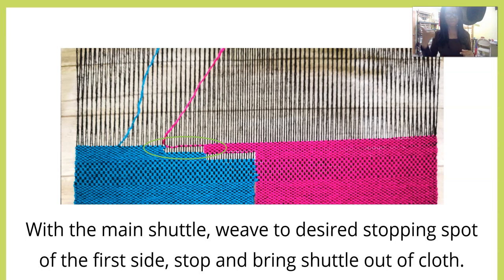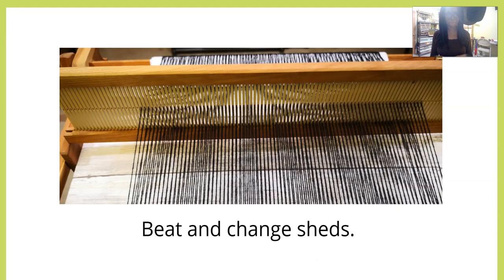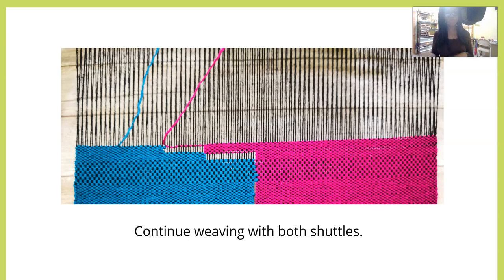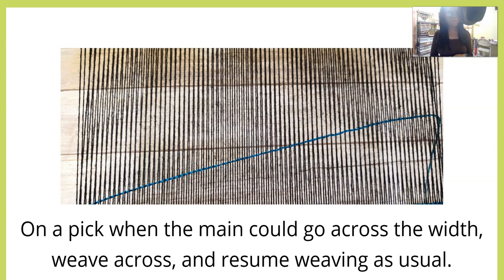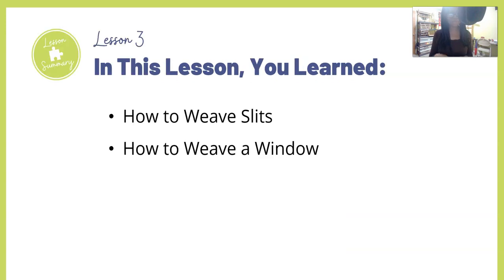With the second shuttle, skip over the desired number of warp threads, then continue weaving, leaving a tail to tuck in. On the next pick, beat and change sheds. Continue weaving with both shuttles. On the main pick when the yarn could go across the width, weave across and resume weaving as usual. You'll find an over-the-shoulder video of me weaving after this lesson, labeled 'Woven Windows.'